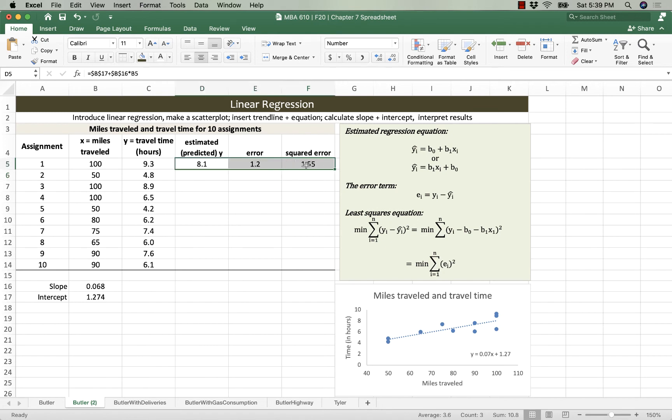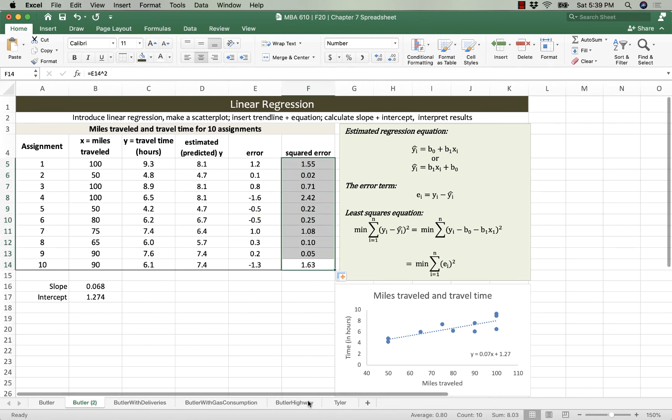I'm going to drag this down, you can calculate it for each one, but that takes a while. And I just want you to notice a couple of things. The errors, some are positive and some are negative, but the squared errors, they are all positive because the square of a negative number is positive. And that's why we have to square this term in the least squares equation, because if we sum up positive and negative numbers, we cancel ourselves out.